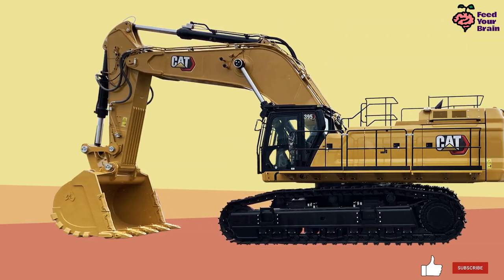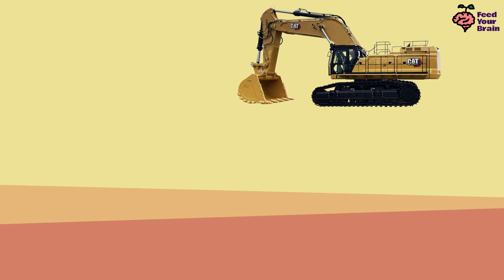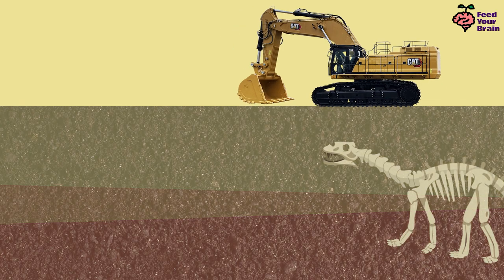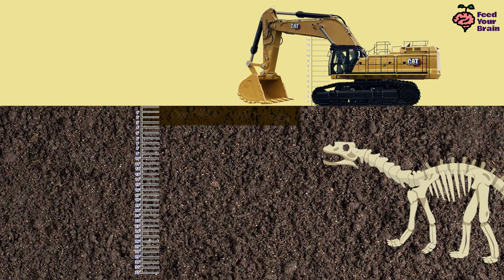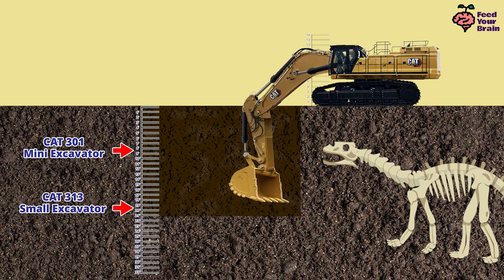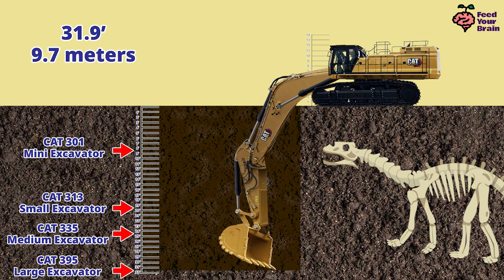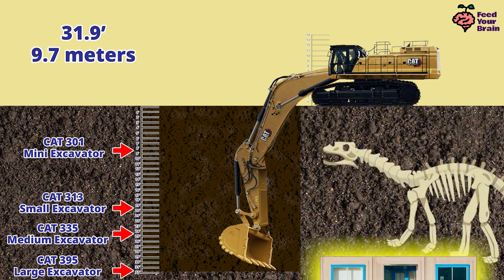Let's look at this large-sized model number 395 excavator and see how far down it can dig. This time we have to zoom way out, because this giant excavator can dig down much more than the smaller excavators. The mini digs to just over 8 feet, the 313 digs to almost 20 feet, the 335 digs to almost 25 feet. And now the large 395 excavator can dig even deeper to a whopping 31.9 feet deep — more than 3 stories. That is amazing.